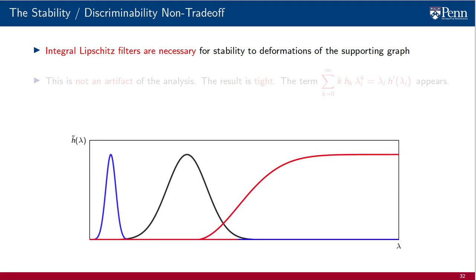The theorem says that integral Lipschitz filters are necessary for stability to deformations of the supporting graph. The proof shows that this is not an artifact of the analysis. The result is tight. A series that represents the product of λᵢ with the derivative of the frequency response of the filter appears in the proof. This is the term that requires the use of integral Lipschitz filters.